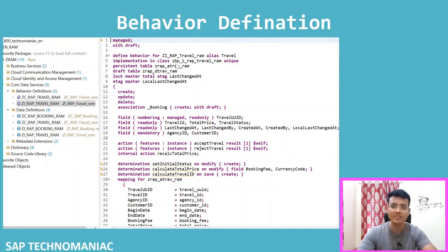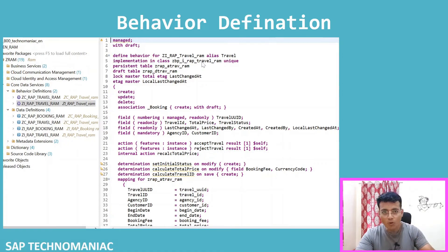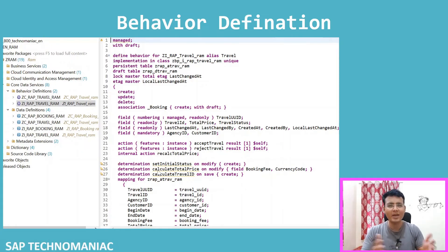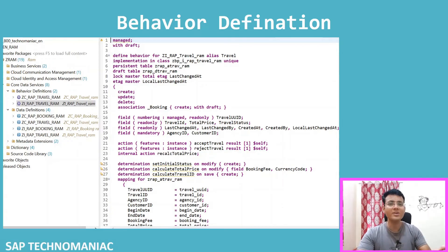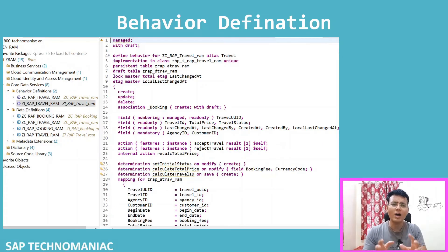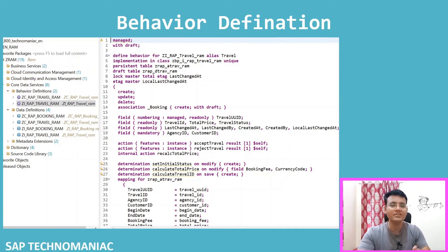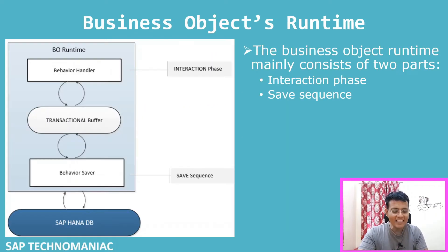Here we define what we want to do, and if we want to write actual code for any of these things, we do it in the ABAP class. In this example, the implementation class is defined in the behavior definition itself. There are different managed and unmanaged scenarios we will discuss in upcoming videos when we do the actual development. I just wanted to show you how a behavior definition looks.